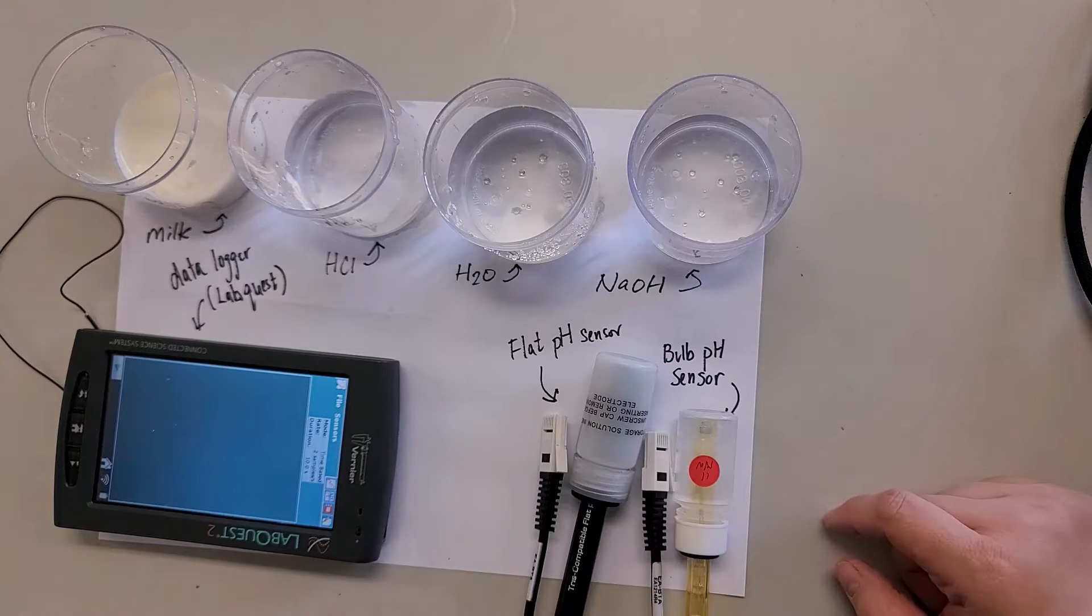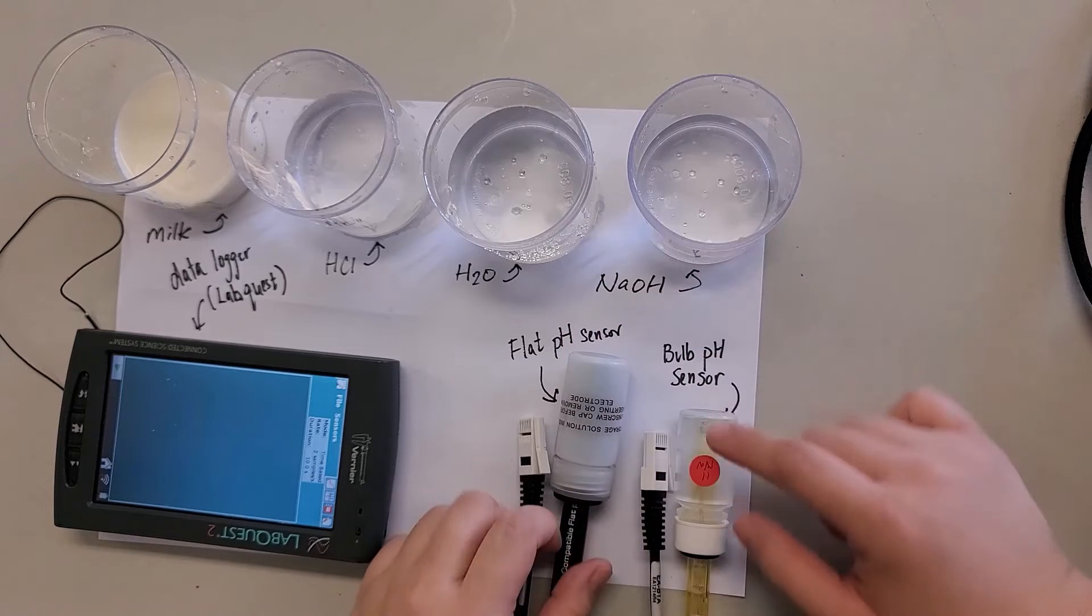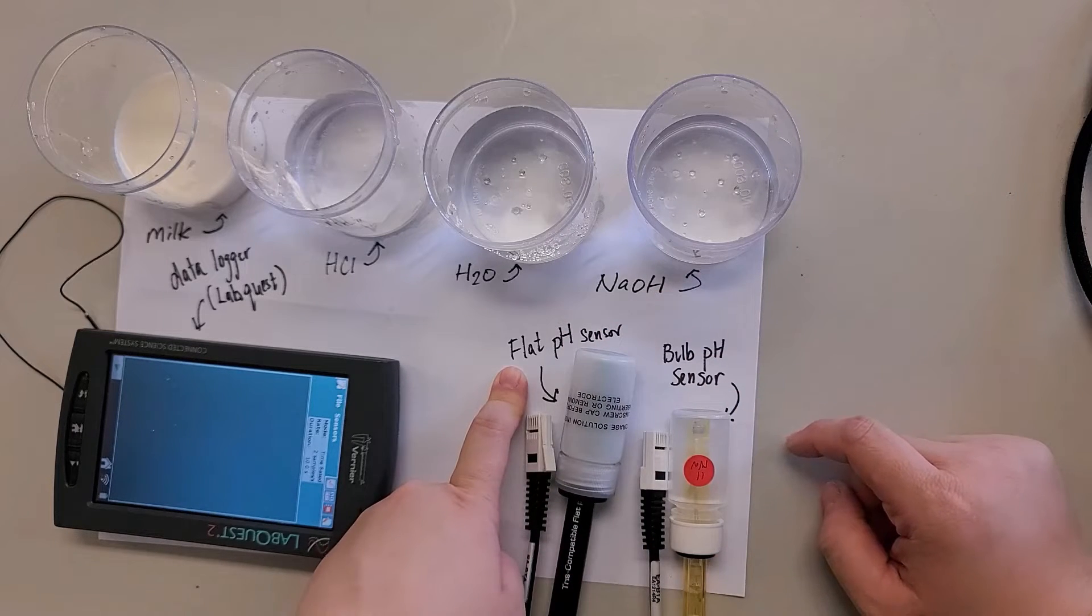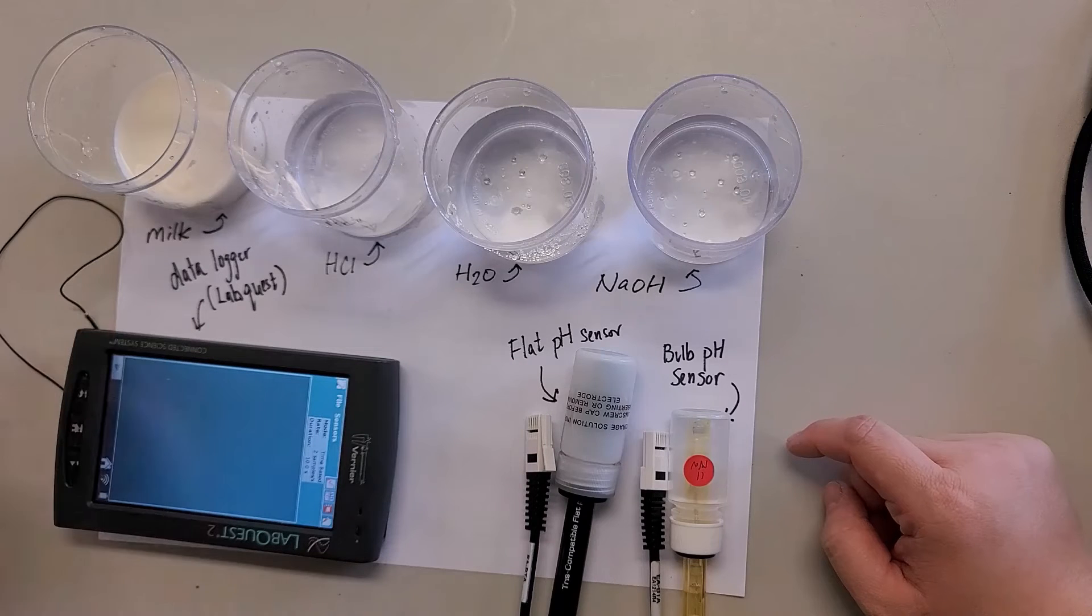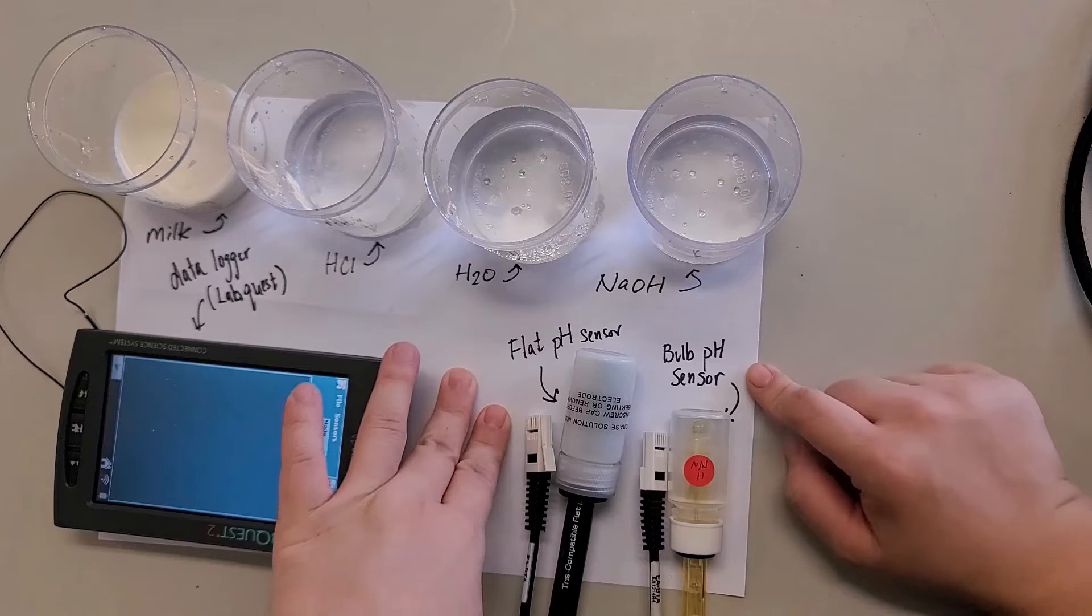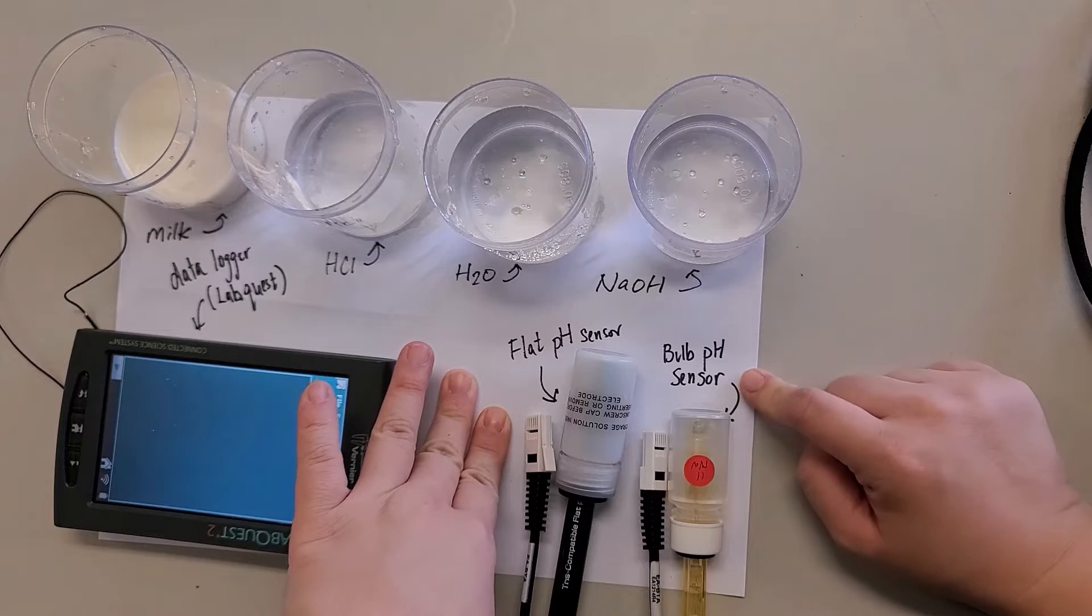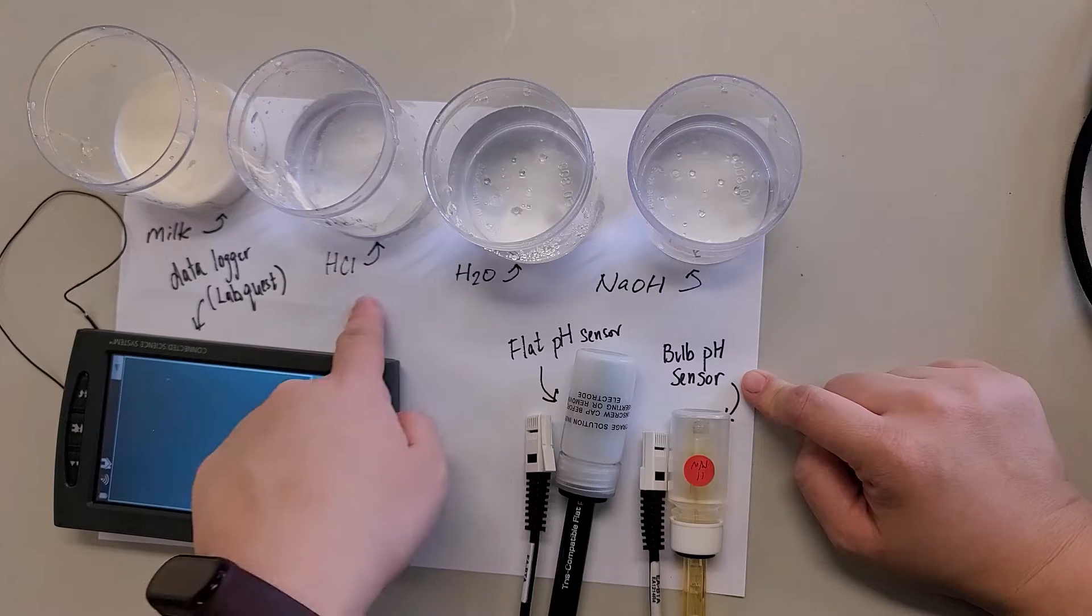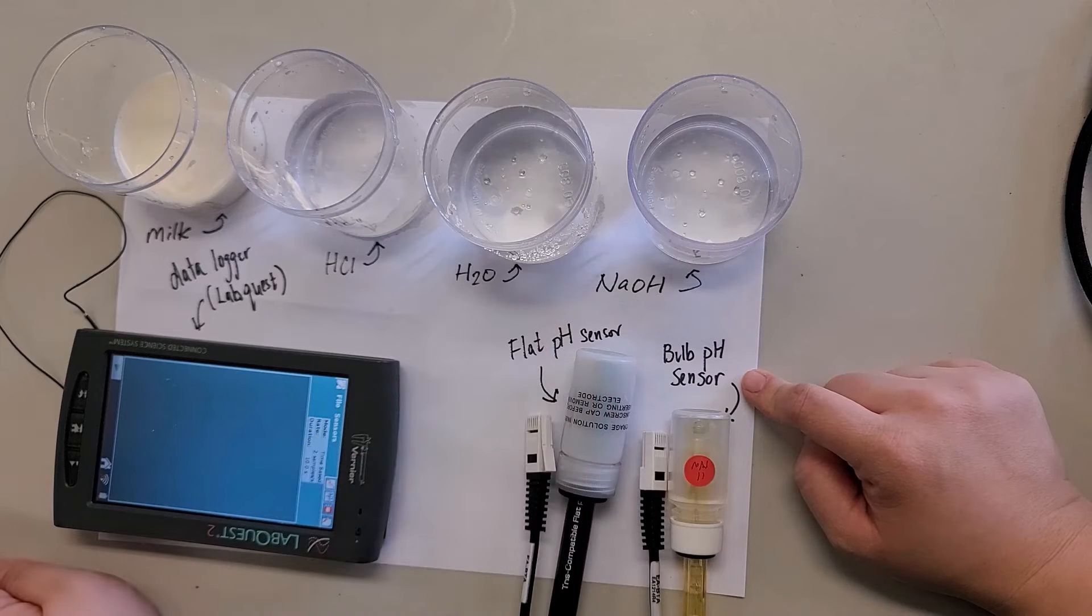Same thing is, there's two types of pH sensor. One is called the flat pH sensor. It's used to measure colloid solutions, such as milk. And another one is the bulb pH sensor. It's used to measure clear solutions like these.